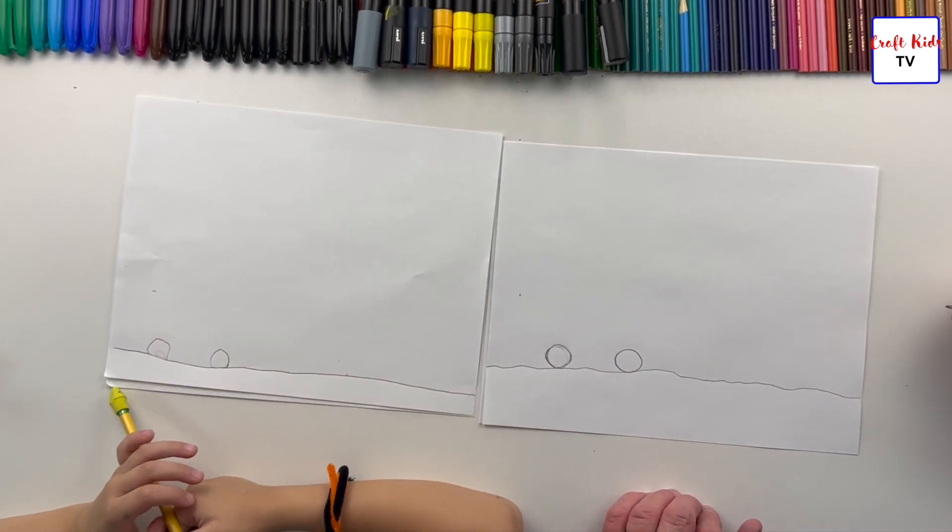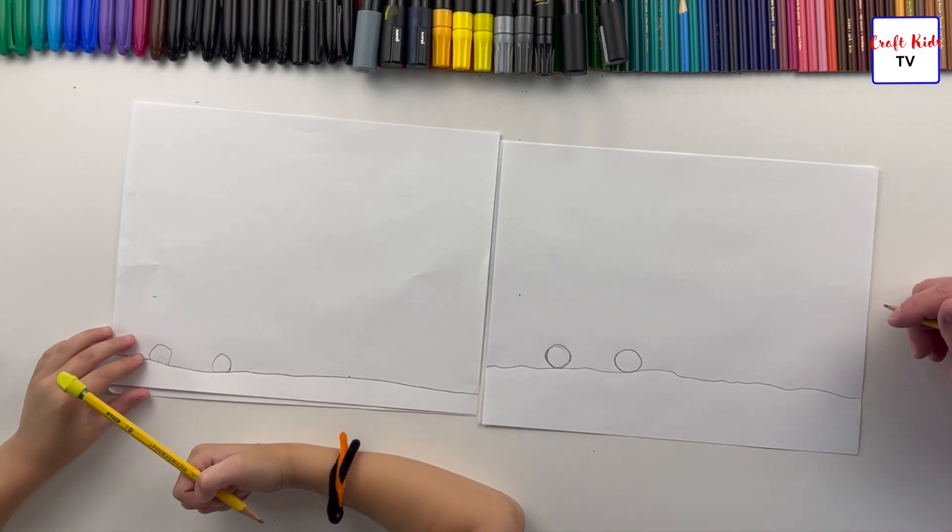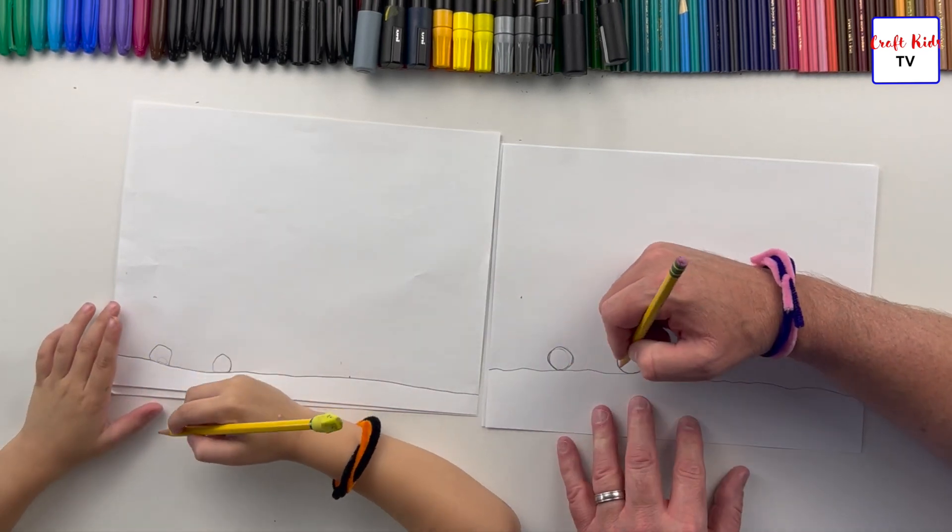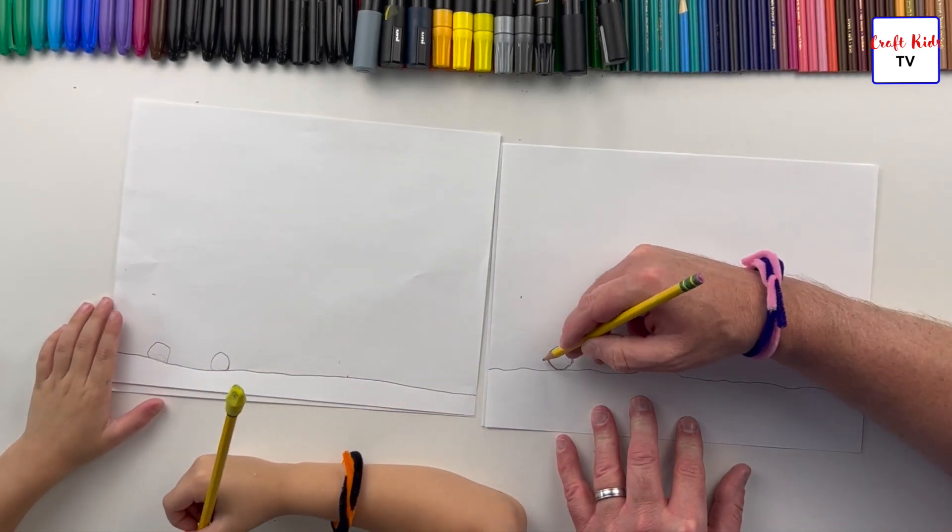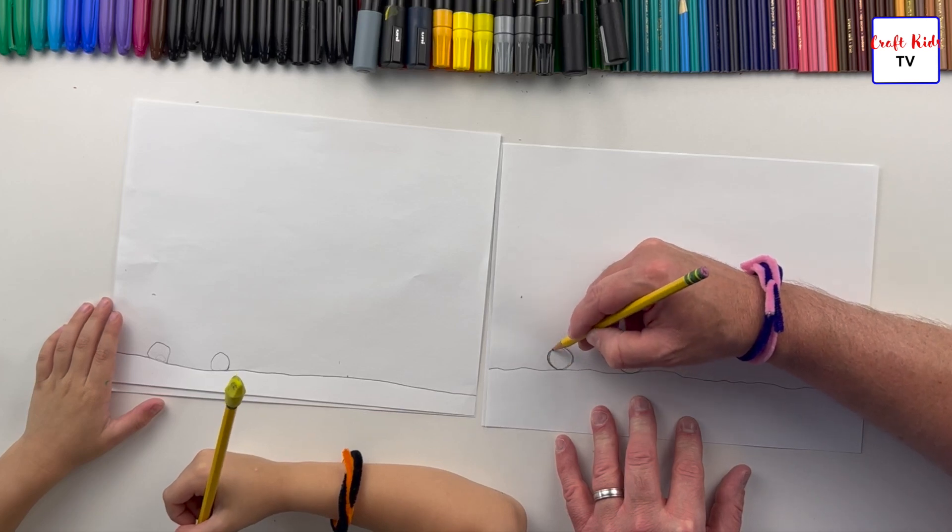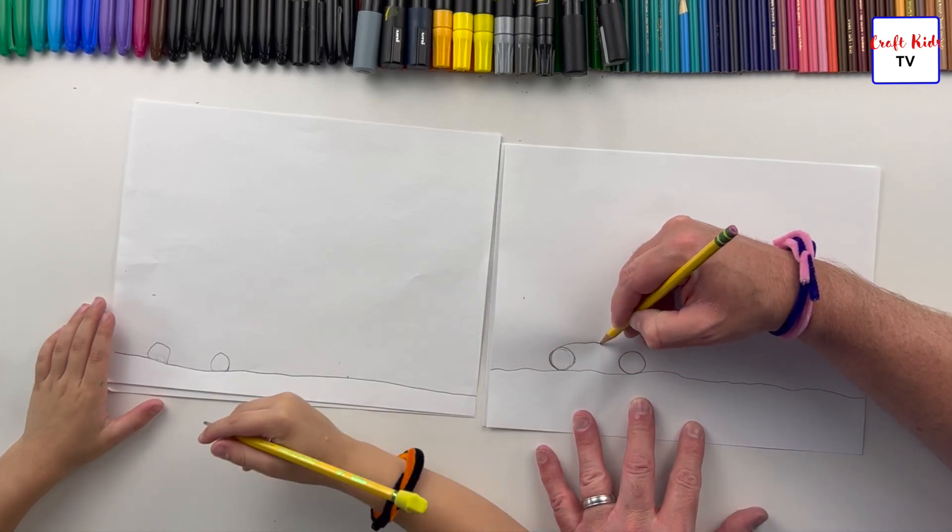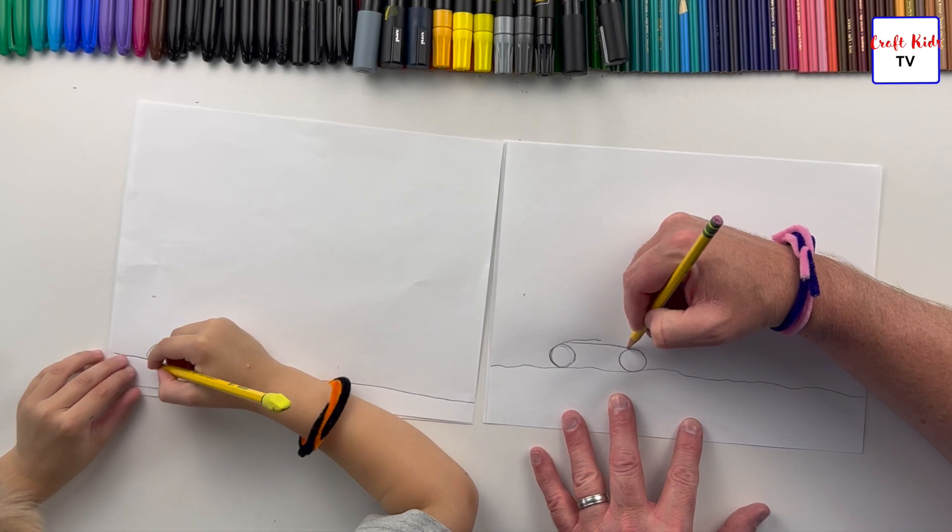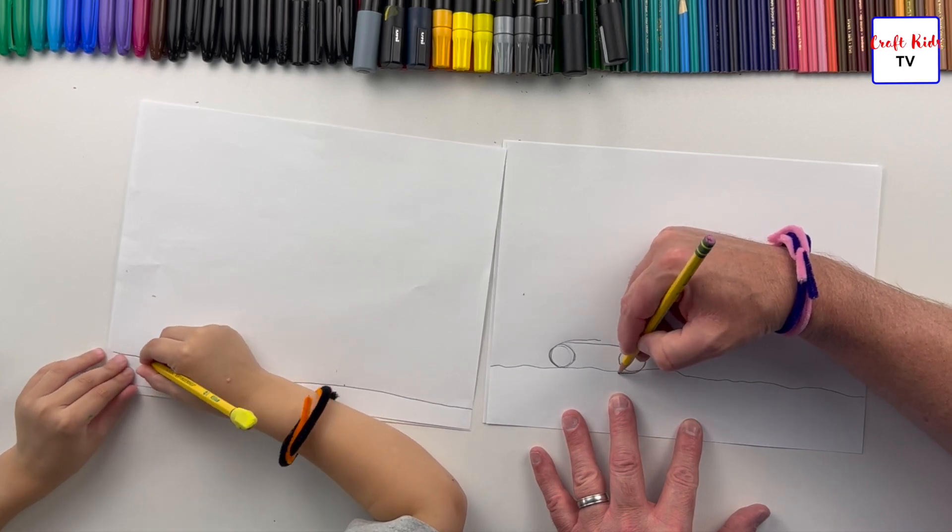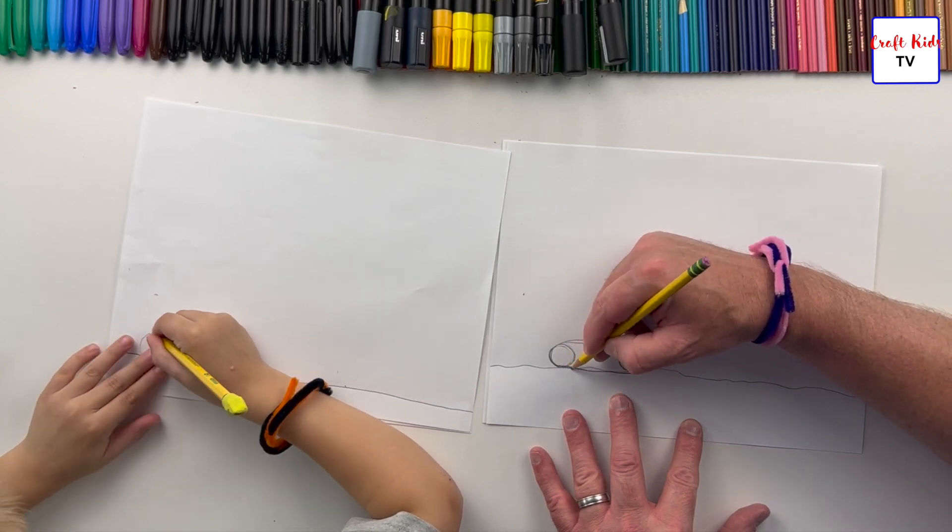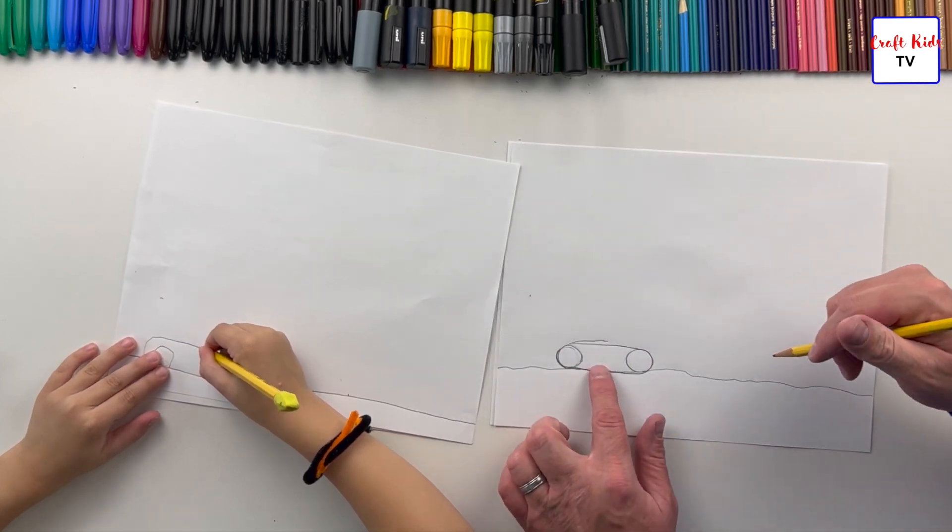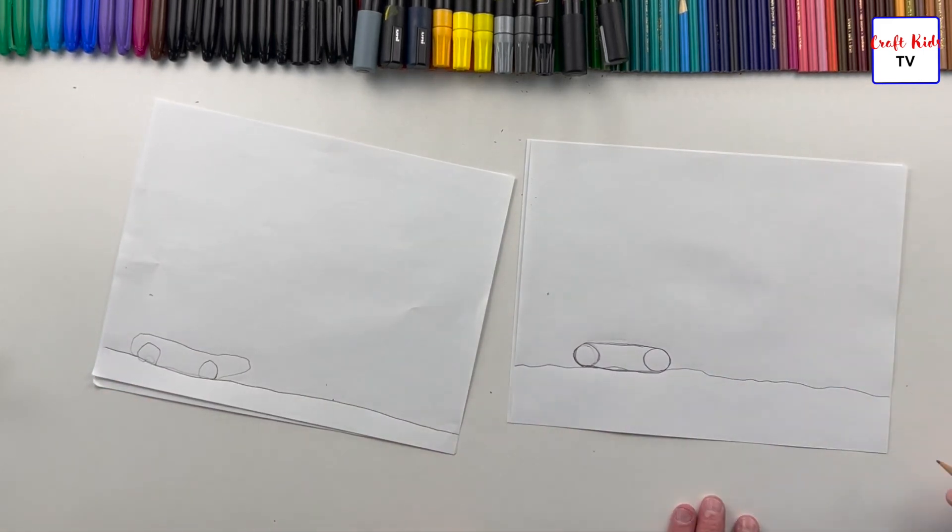Now we're going to connect those circles with a track. We're going to connect them with the track, which is like a big oval. So the track's going to go around, and it's going to go straight across the top and straight across the bottom. But the bottom is going to be hitting the dirt.